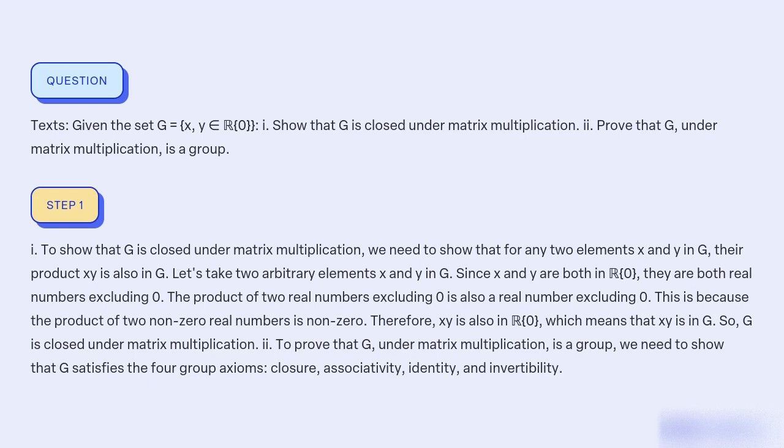This is because the product of two non-zero real numbers is non-zero. Therefore, XY is also in R(0), which means that XY is in G, so G is closed under matrix multiplication.